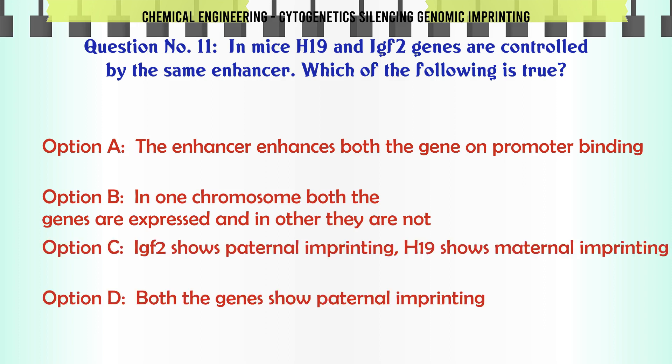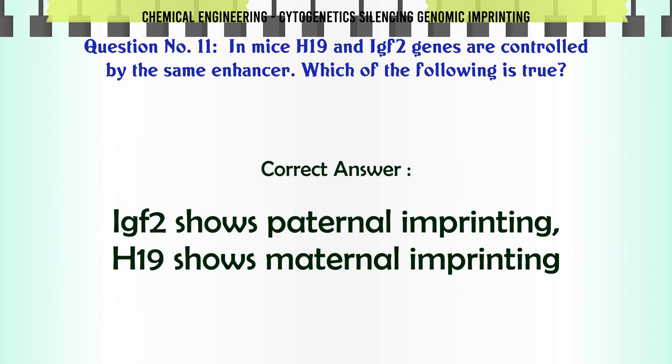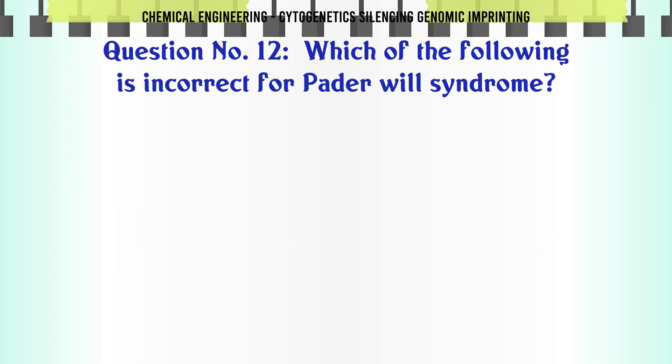In mice, H19 and IGF-2 genes are controlled by the same enhancer. Which of the following is true? A. The enhancer enhances both genes on promoter binding. B. In one chromosome both genes are expressed and in the other they are not. C. IGF-2 shows paternal imprinting and H19 shows maternal imprinting. D. Both genes show paternal imprinting. The correct answer is C: IGF-2 shows paternal imprinting and H19 shows maternal imprinting.